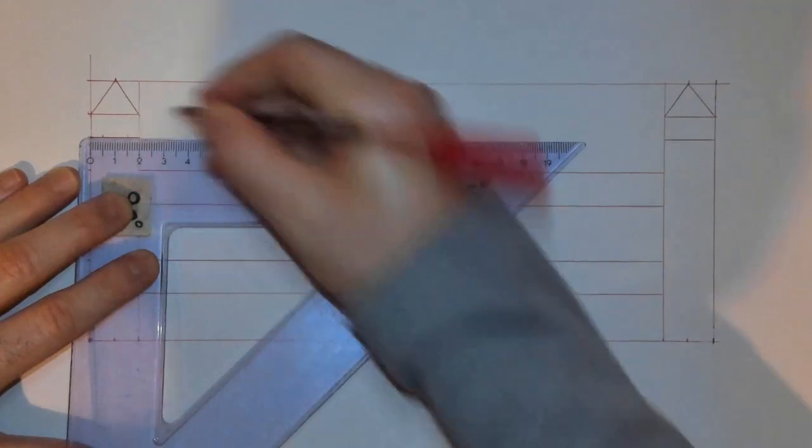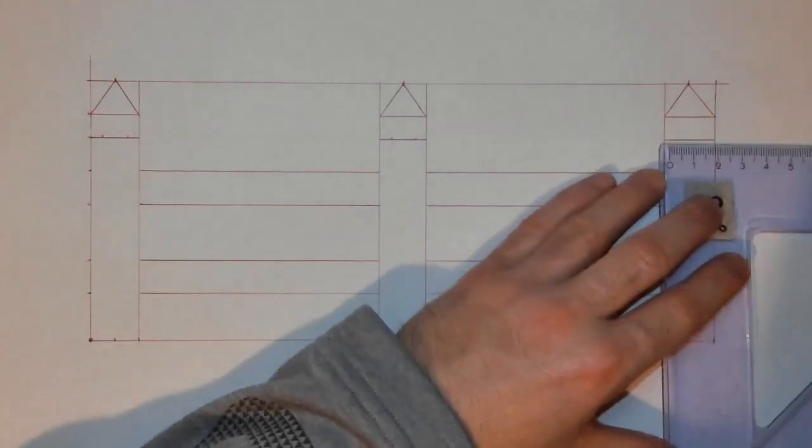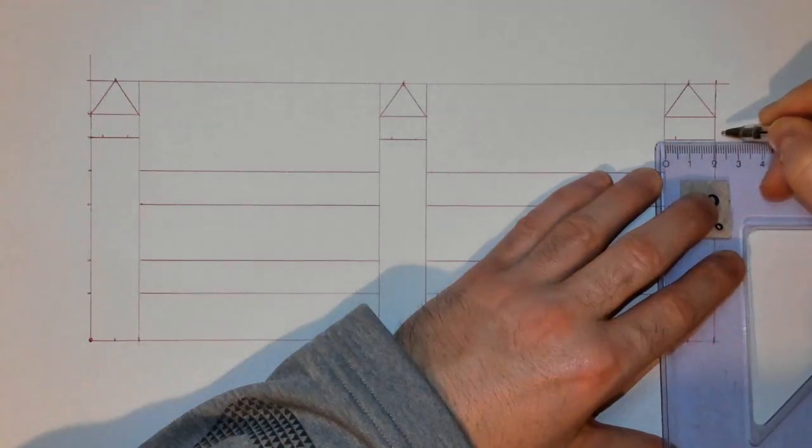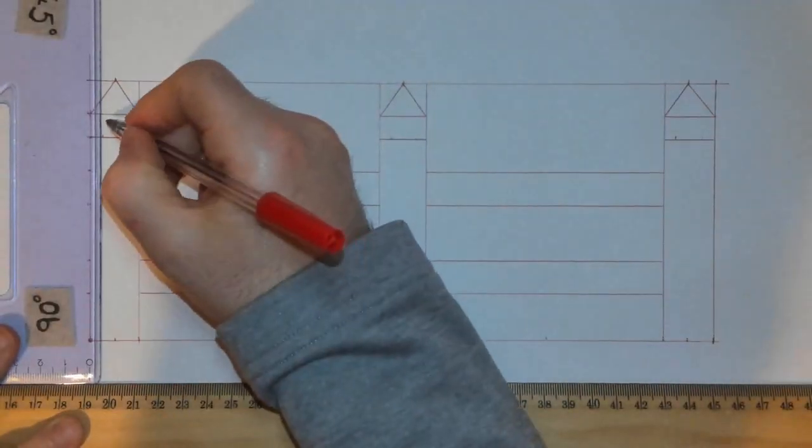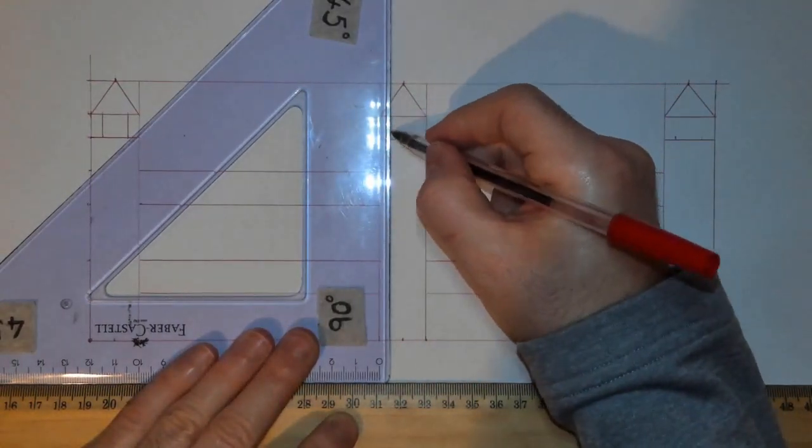All we're missing is the little section that attaches them here. If you remember there was a little five millimeter gap either side, so mark five in and then mark five back.